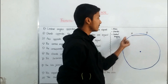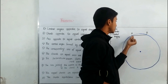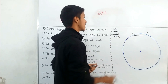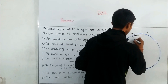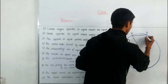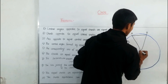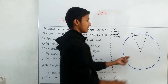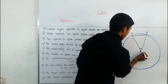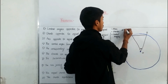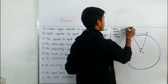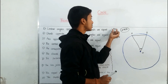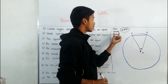A chord means a line joining two points on the circumference. Suppose A and B are two points on the circumference, and the straight line joining these two points is known as a chord. Central angle means when two radii enclose an angle at the center, that angle made at the center is known as a central angle — so angle AOB is a central angle.